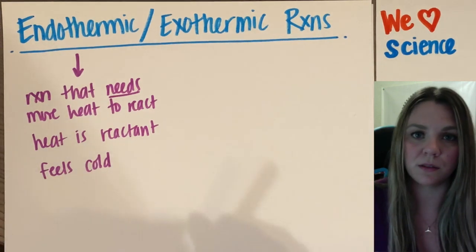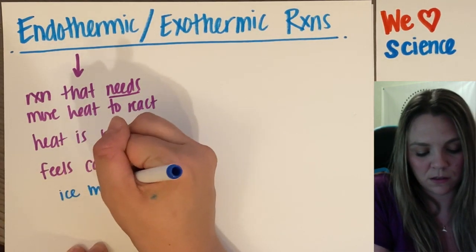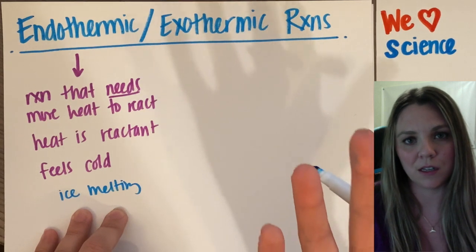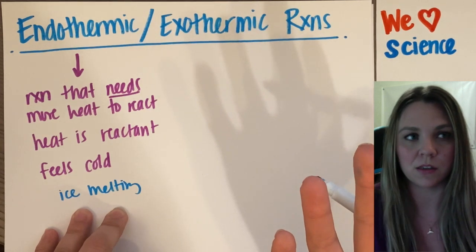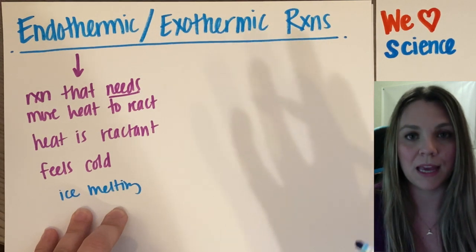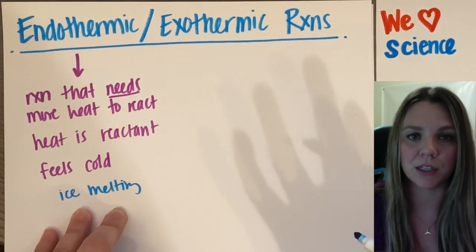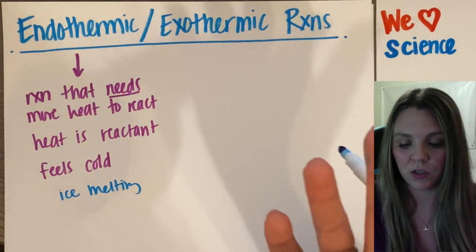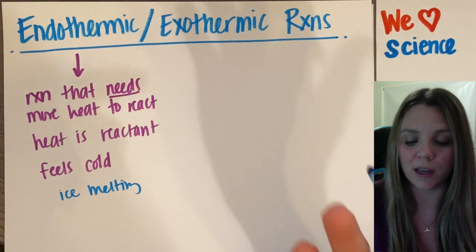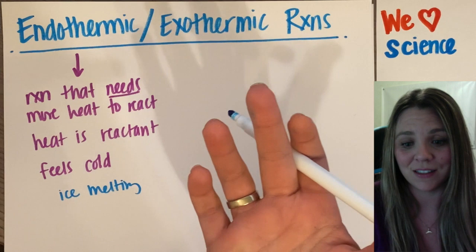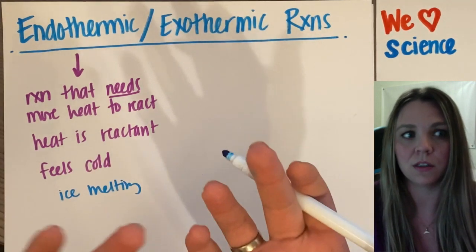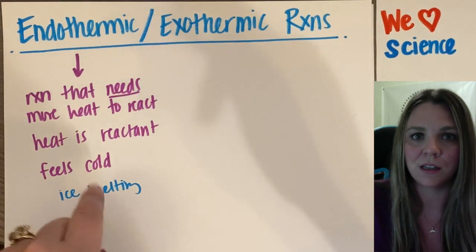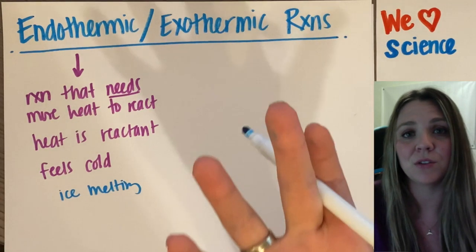A good example of this, which everyone always gets wrong, is ice melting. If you put ice in your hand, everyone always thinks the temperature of the ice is going up, so it must be exothermic. No — that's actually an endothermic reaction. The ice cube needed heat in order to melt. You feel the cold of the ice on your hand because it's actually stealing the energy of your hand to warm up and literally melt the ice. Ice melting is endothermic — it's taking energy from around it in order for that reaction to happen.